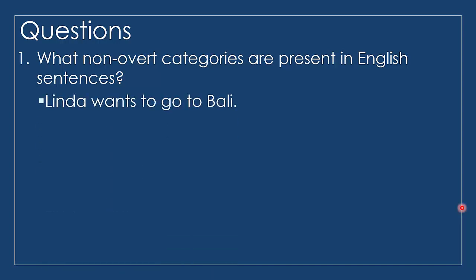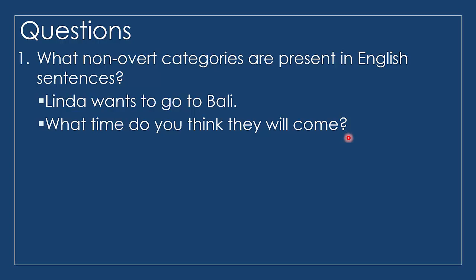We have sentences like 'Linda wants to go to Bali.' Here it's clear that the person who wants is Linda, but who is the person who goes to Bali? We also understand that the person who goes to Bali is also Linda. We also have a sentence: 'What time do you think they will come?' — 'What time' is produced from 'They will come at what time,' and then it moves to this position. So there is a position which was formally occupied by 'what time.'